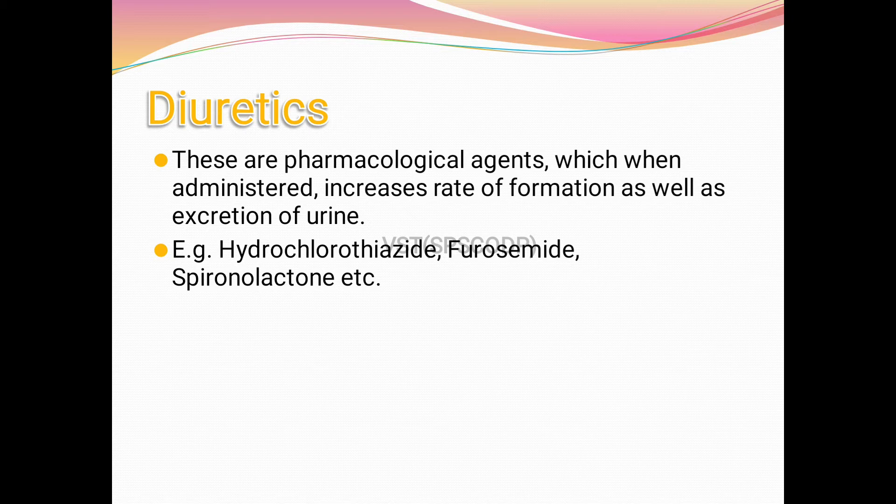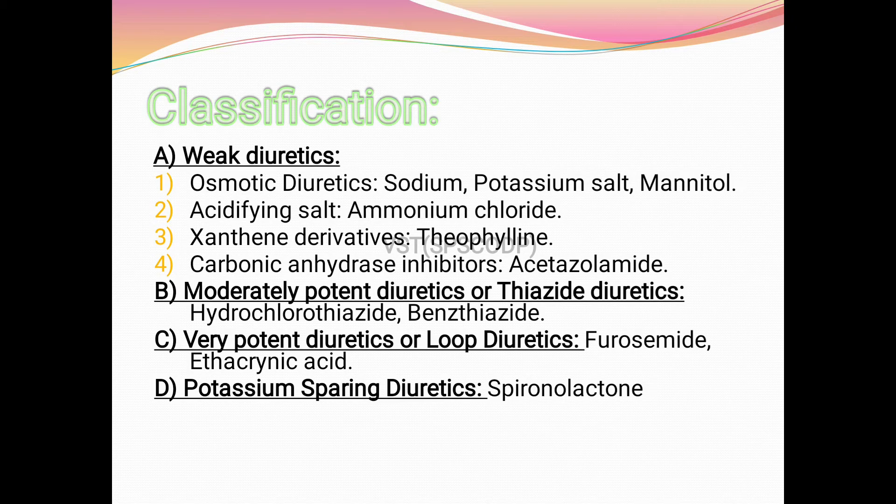These are examples of diuretics. Classification of diuretics: weak diuretics — the first type is osmotic diuretics, which include sodium, potassium salts, and mannitol.